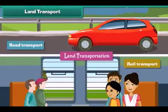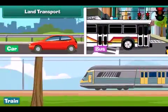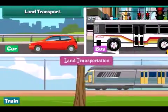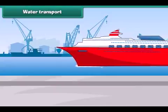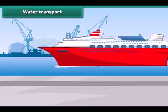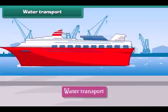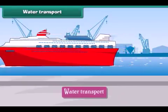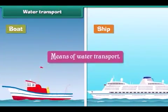Water transport: The movement of goods and passengers on water is called water transport. The vehicles that carry goods and passengers on water are called means of water transport. Boats and ships are the means of water transport.